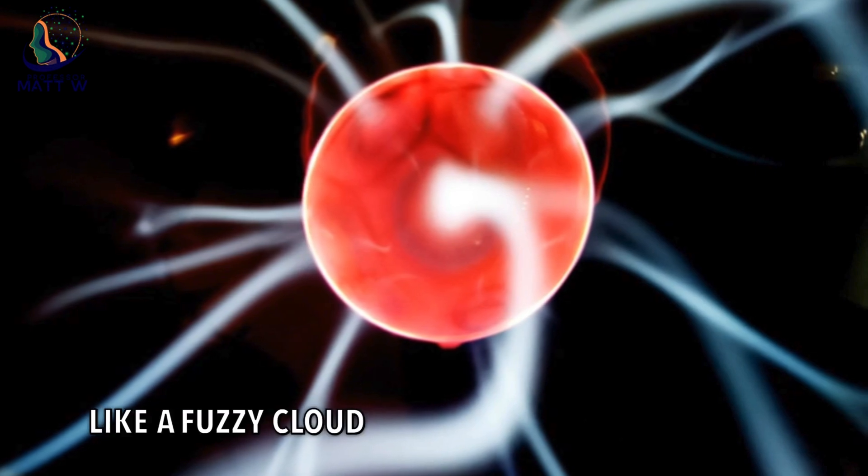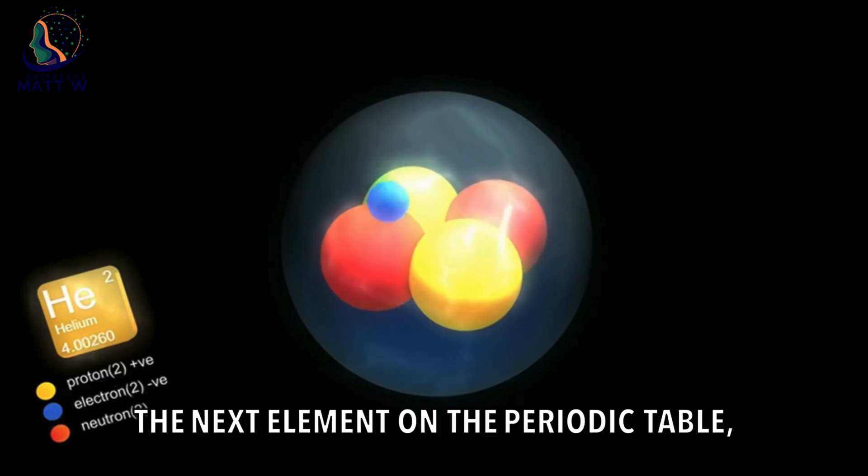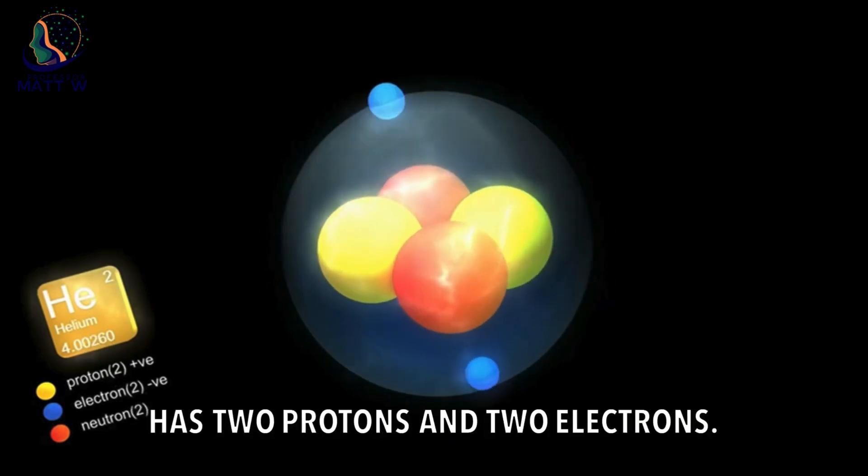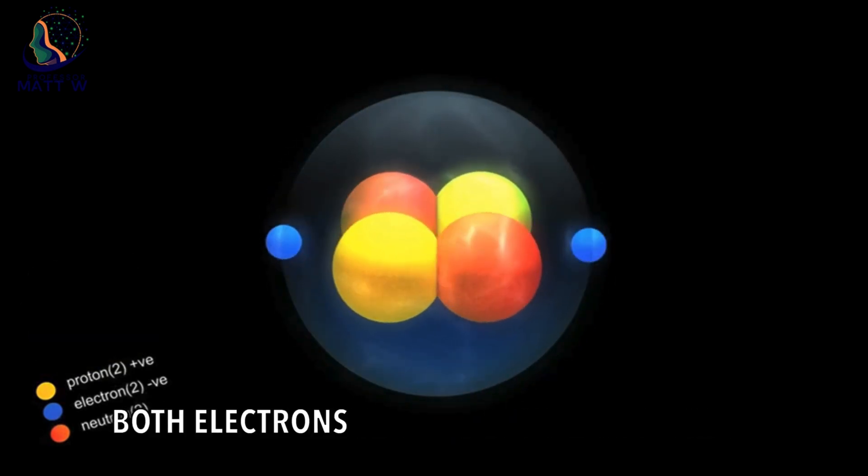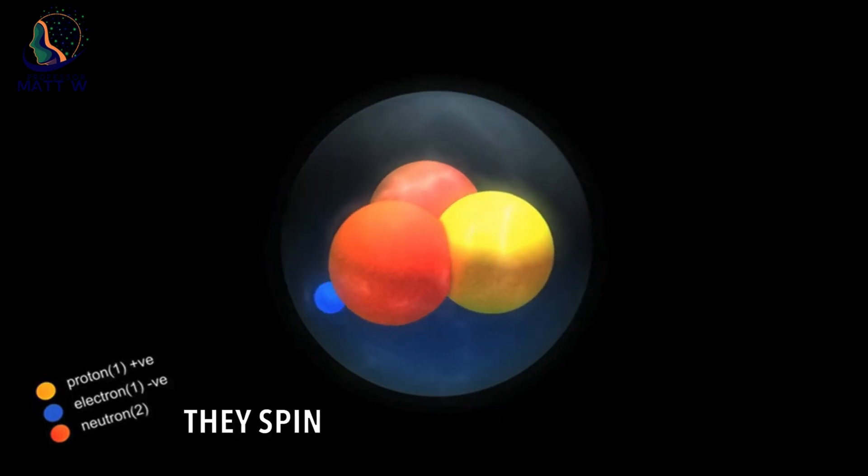Helium, the next element on the periodic table, has two protons and two electrons. Both electrons in helium also occupy the s orbital. However, they spin in opposite directions.